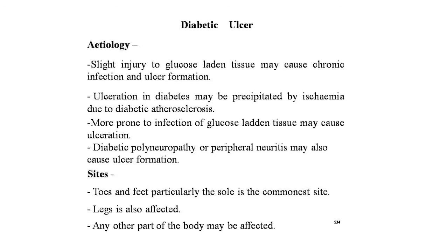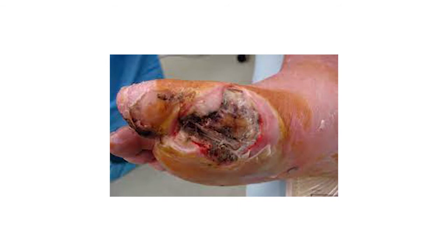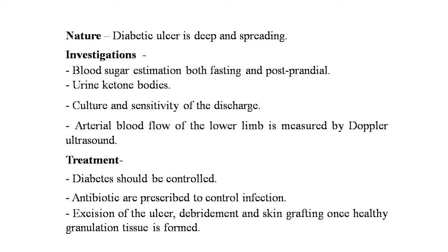Diabetic ulcer etiology: slight injury to glucose-laden tissue may cause chronic infection and ulcer formation. Ischemia due to diabetic atherosclerosis, increased susceptibility to infection of glucose-laden tissues, diabetic polyneuropathy, and peripheral neuritis may all cause ulcer formation. The commonest site is the toes and feet, particularly the sole; the leg may also be affected. The diabetic ulcer is deep and spreading. Investigations: blood sugar (fasting and postprandial), urine ketone bodies, culture and sensitivity of discharge, and arterial blood flow measured by Doppler. Treatment: control diabetes, prescribe antibiotics, perform excision and debridement with skin grafting once healthy granulation tissue forms; if uncontrolled with gangrene, amputation is the treatment of choice.